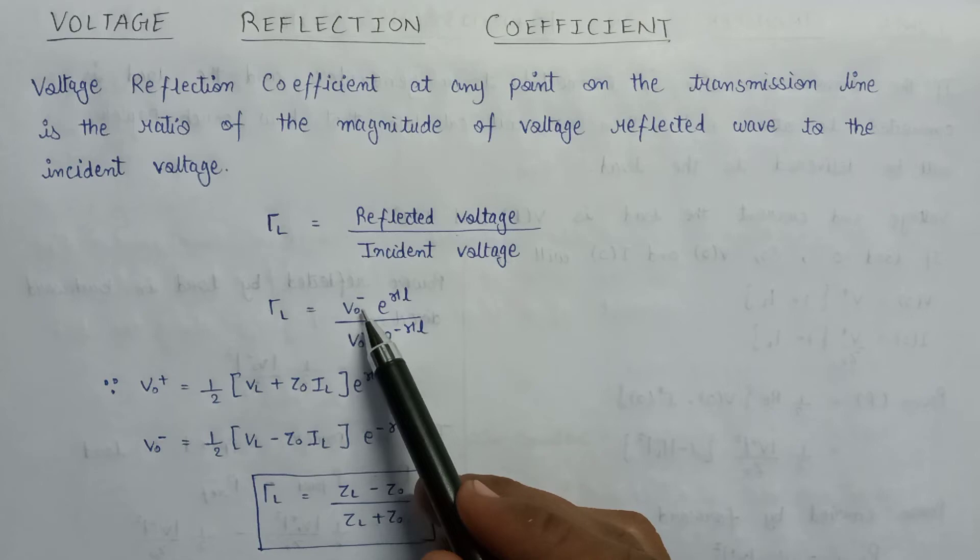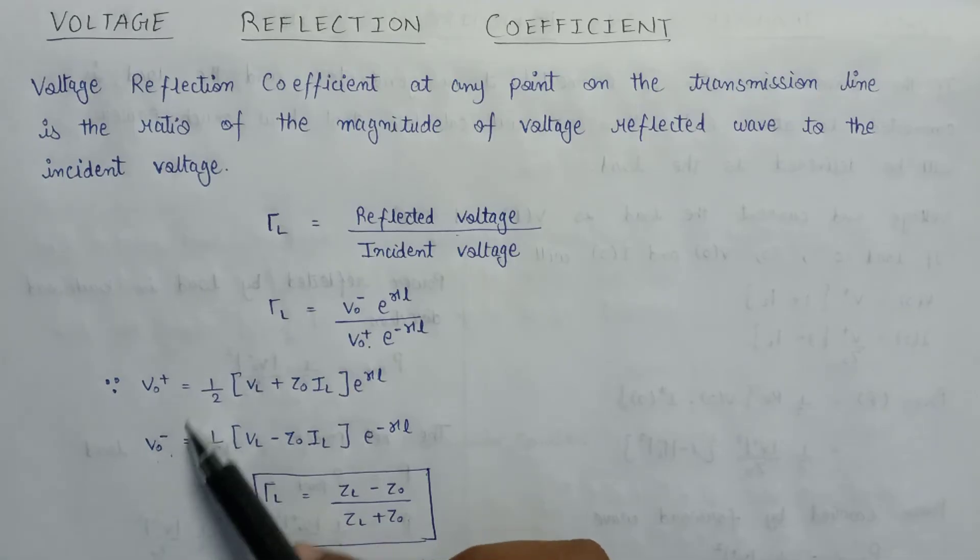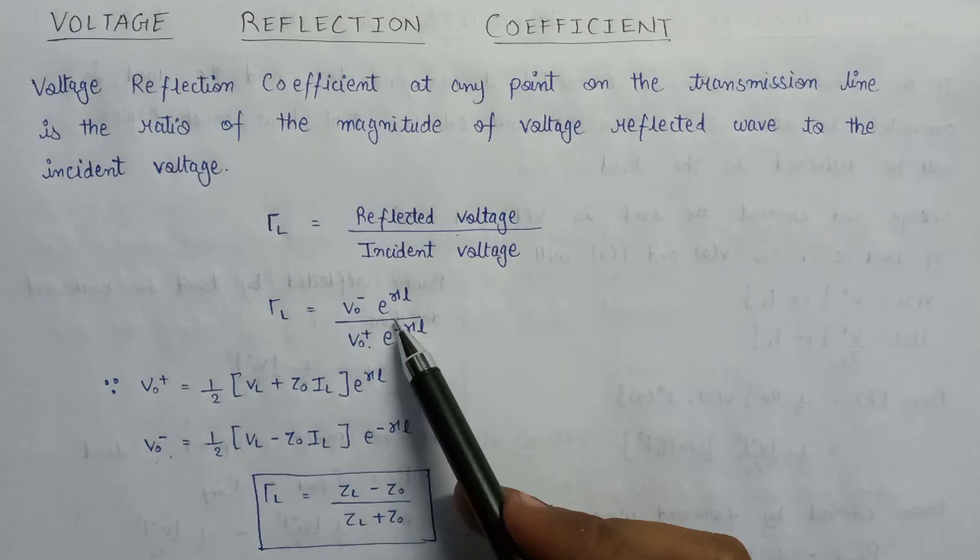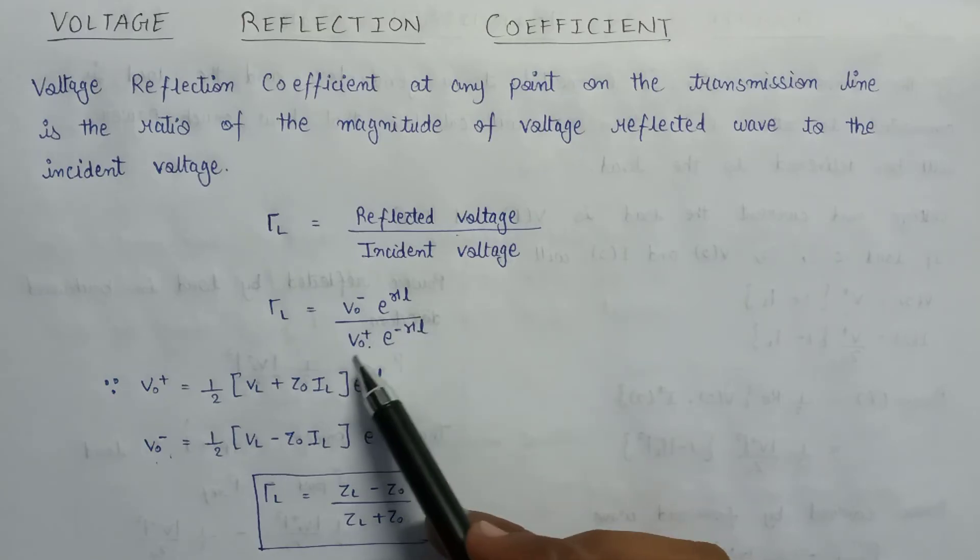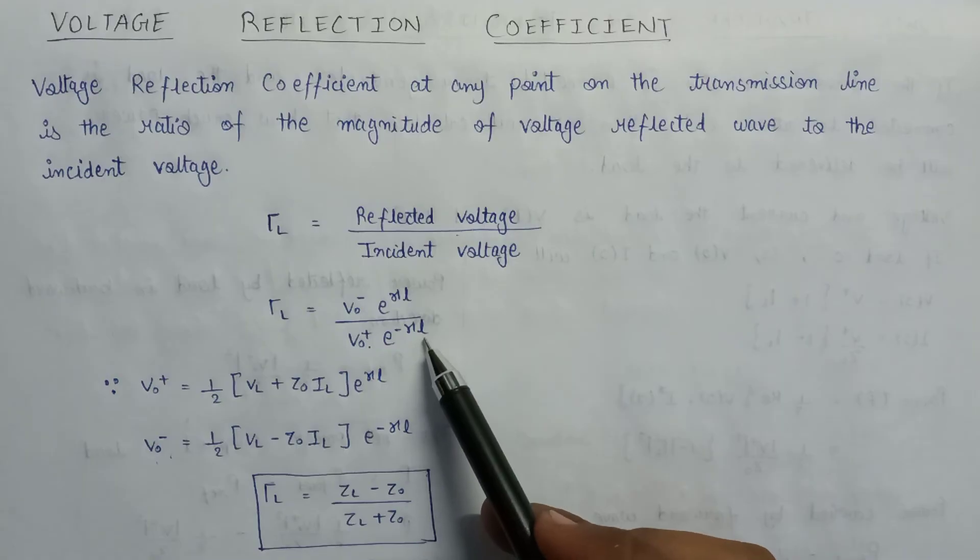This is the value of V naught plus and this is the value of V naught minus. If we substitute both these values in the above expression, that is V naught minus e to the power gamma L over V naught plus e to the power minus gamma L, then we get this value.